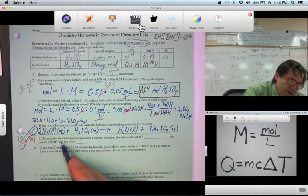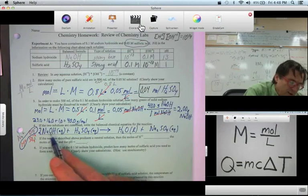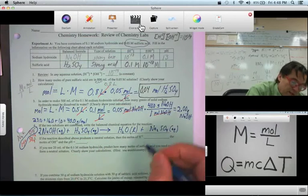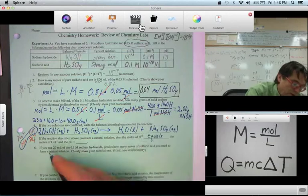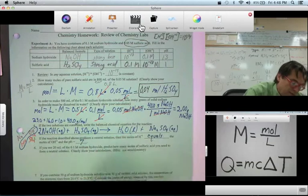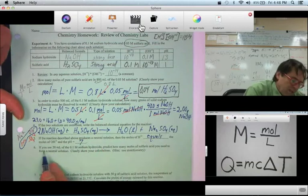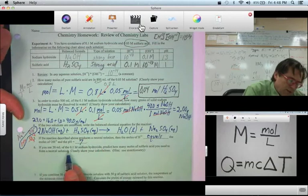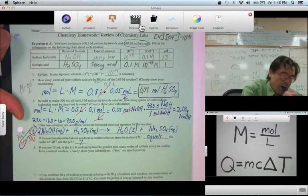If the reaction described above produces a neutral solution where the hydrogen ions, the H+ ions, and the OH- ions are in balance, then the moles of H+ equals the moles of OH-, and the pH is seven in a neutral solution. Okay. Question six.